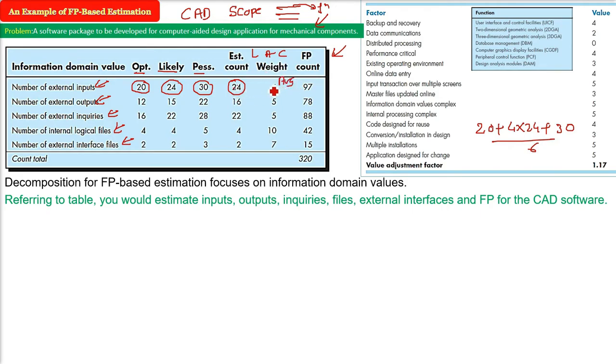So now multiply the this fourth column with fifth column and write it on the last column. And the finally multiplied value, you just add them, you get 320. So this is your function points.